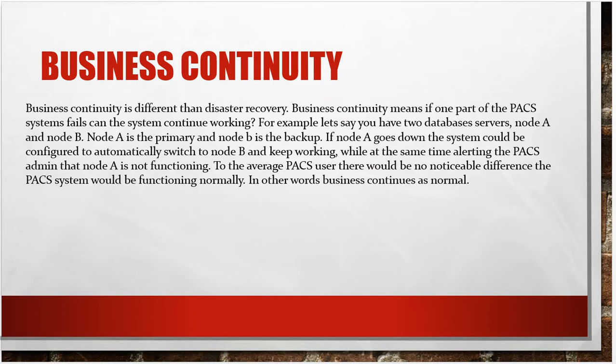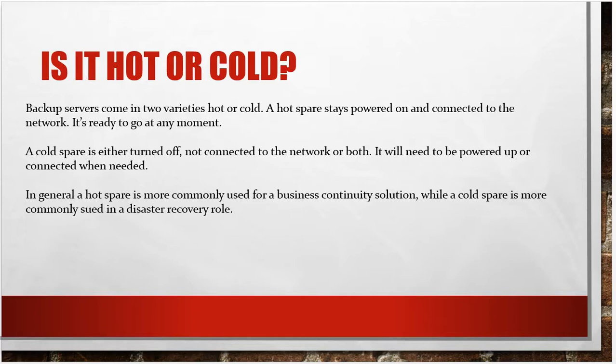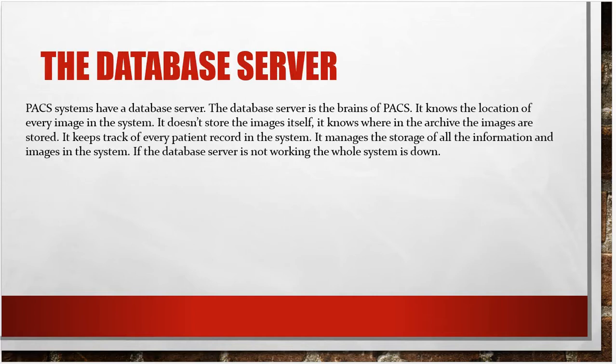Of course, it's going to send the PACS admin scurrying to the data center to figure out why node A is down, because now there's no backup node. Hot or cold backup servers come in two varieties: hot or cold. A hot spare stays powered on and connected to the network — it's ready to go at any moment, either manually or automatically, like in the node A and node B example. A cold spare is either turned off, not connected to the network, or both — it will need to be powered up and connected when needed. A hot spare is more commonly used for a business continuity solution, while a cold spare is more commonly used in a disaster recovery role.